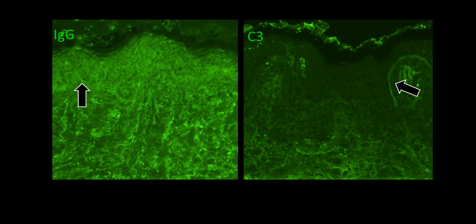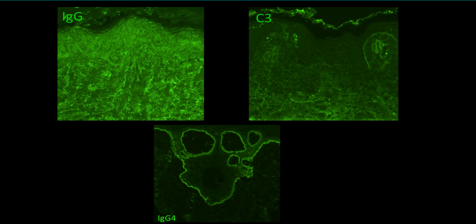Here's an example from the series in which there was very focal linear IgG deposition along the basement membrane zone. Due to considerable background staining, it would be very difficult to call this finding. C3 also shows some focal and discontinuous linear deposition, which would not alone be diagnostic for subepidermal autoimmune blistering disease. In the same case, IgG4 demonstrated strong continuous linear deposition along the basement membrane zone, which increased confidence in the interpretation of IgG and C3 changes.